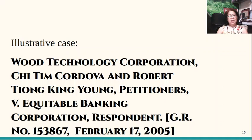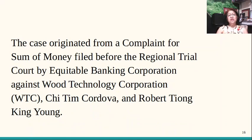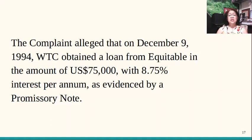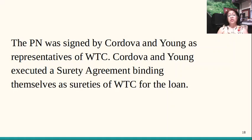We have a good illustrative case on summary judgment: Wood Technology Corporation, Xi Tim Cordova and Robert Tiong King Yang, petitioners versus Equitable Banking Corporation — a 2005 case. This case originated from a complaint for sum of money filed before the Regional Trial Court by Equitable Banking Corporation against Wood Technology Corporation, Cordova, and Yang. Equitable Bank lent money to Wood Technology; Cordova and Yang were included because they signed as sureties. The complaint alleged that on December 9, 1994, WTC obtained a loan of $75,000 US dollars with interest at 8.75% per annum, evidenced by a promissory note signed by Cordova and Yang as representatives of WTC.